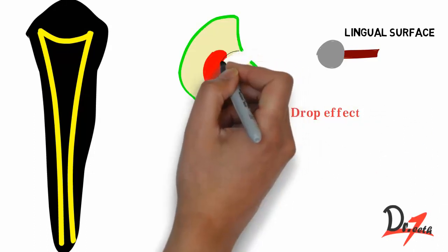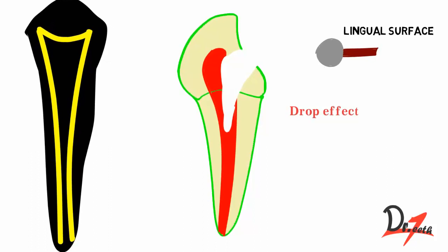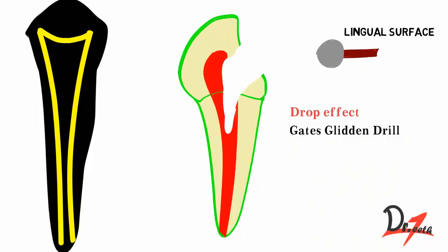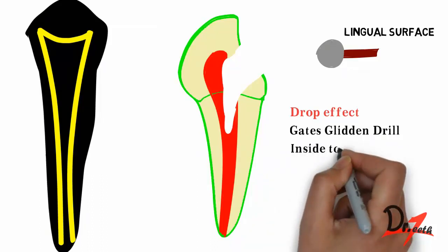Then, using the number 4 round bur at slow speed, remove the overhanging enamel and dentine of the lingual roof of the pulp chamber, including the pulp horn, working from inside to outside. This gives straight-line access — a smooth direct entry into the canal. To enlarge the entrance, the lingual shoulder is removed using the Gates Glidden drill of appropriate size, usually number 4, again working inside out with light strokes.